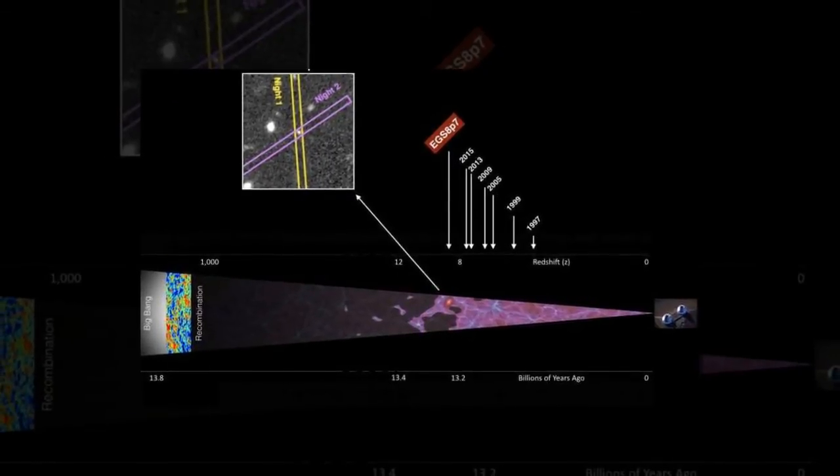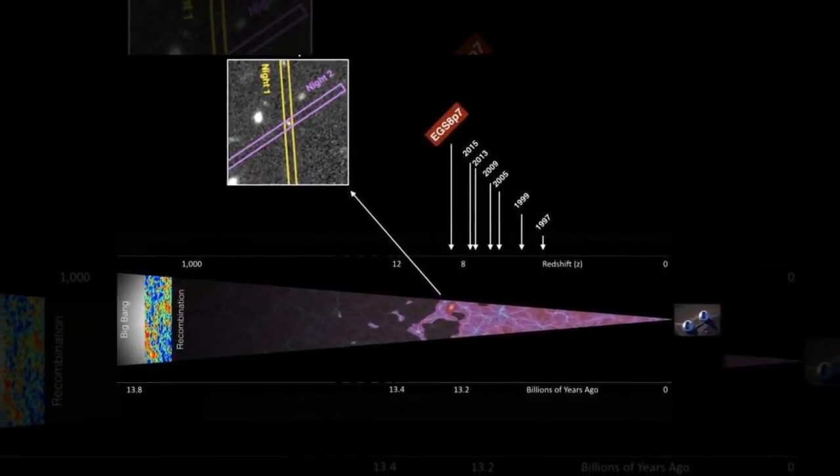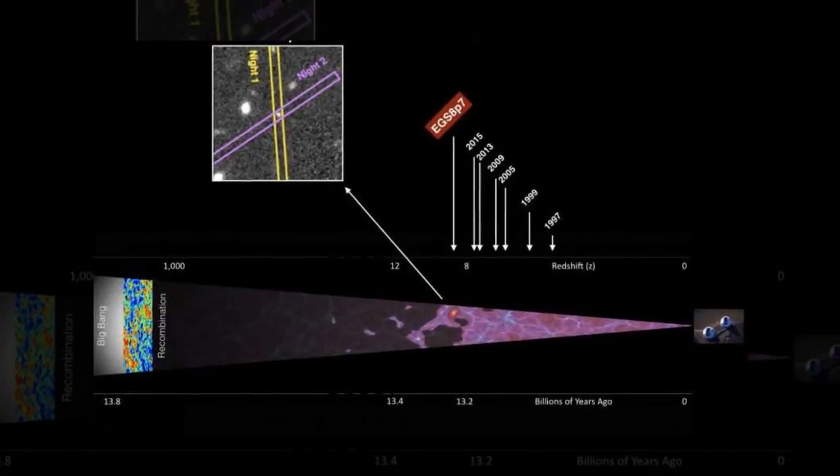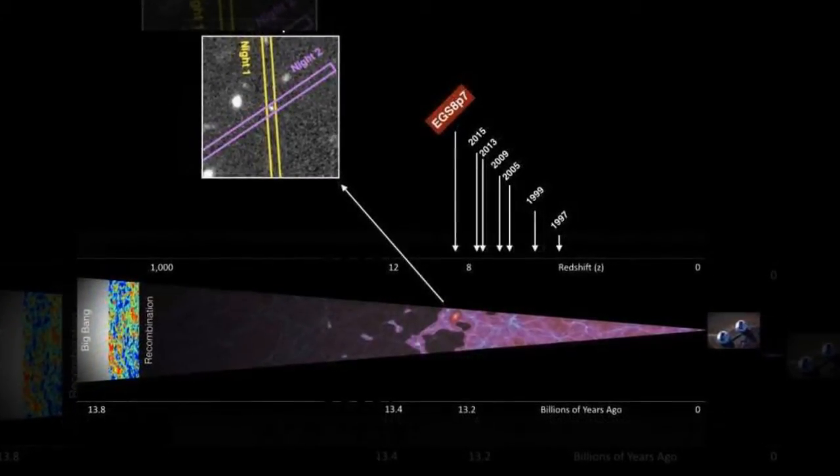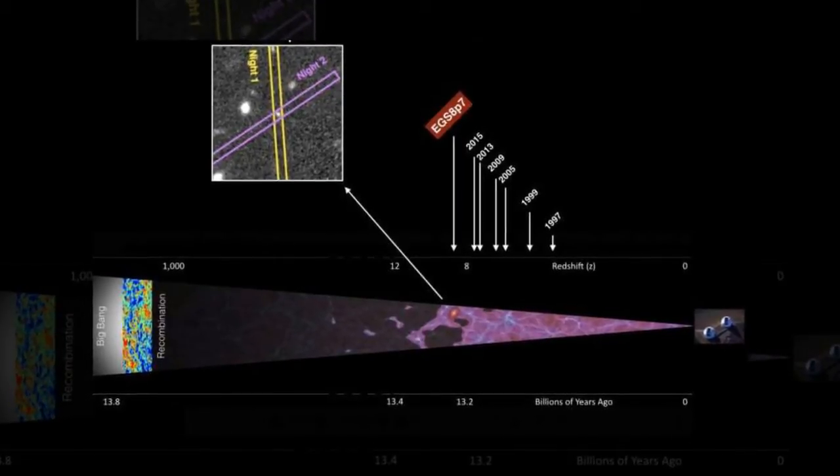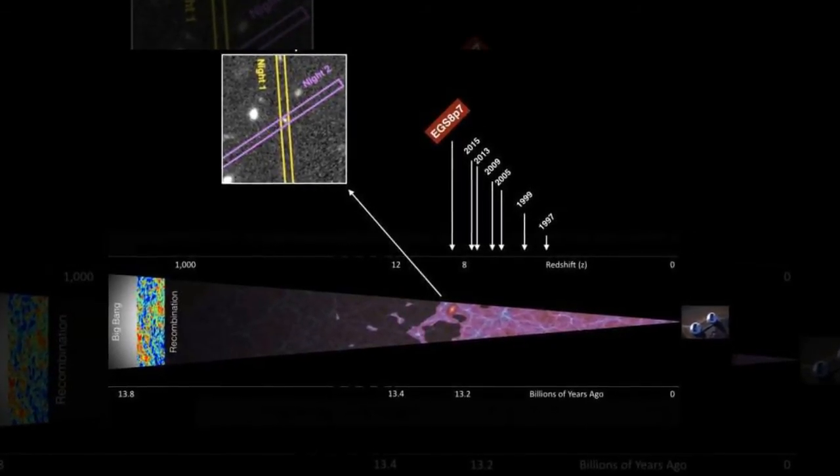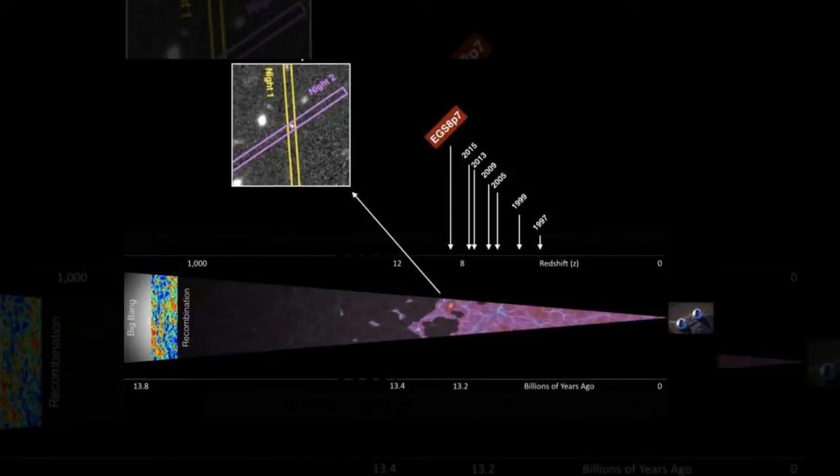A team of astrophysicists using the W.M. Keck Observatory in Hawaii has successfully measured the farthest galaxy ever recorded and, more interestingly, captured its hydrogen emission as seen when the universe was less than 600 million years old.